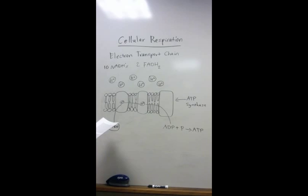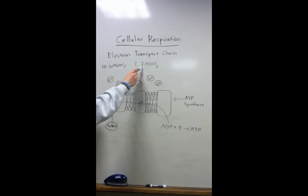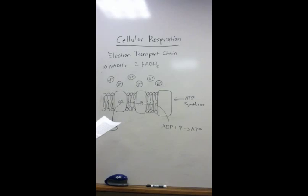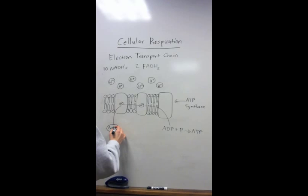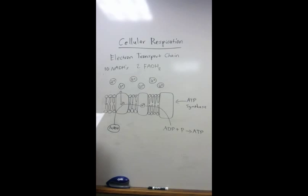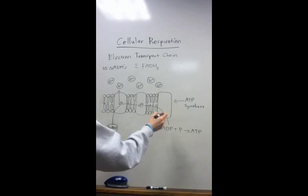After glycolysis and the Krebs cycle occur, ten NADHs are produced and two FADH2s are produced. The NADH and FADH molecules carry electrons along a path and each time an electron passes through, the hydrogen attached to the NADH goes through the transport protein. When this happens, it creates a concentration gradient which produces the energy that enables ADP to bond with a phosphate to create ATP.